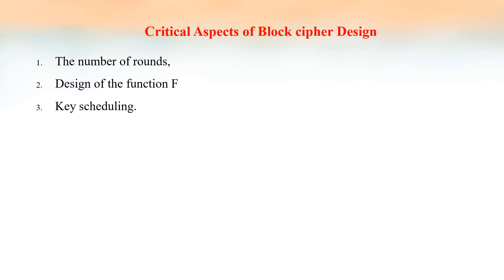These are the critical aspects of block cipher design. The first is the number of rounds: as the number of rounds increases, the security also increases. The second is the design of the function F, which can be made complex. The third is key scheduling, which means generating subkeys from the main key, and that also affects the block cipher design.